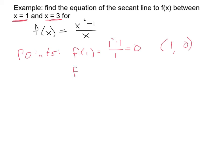For the other one, I do f of 3. And that gives me 9 minus 1 over 3. That's 8 thirds. Great. So my next point is 3 comma 8 thirds.